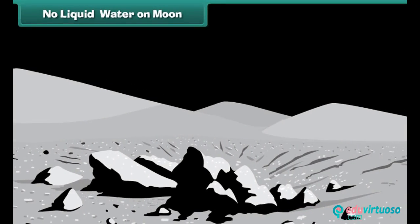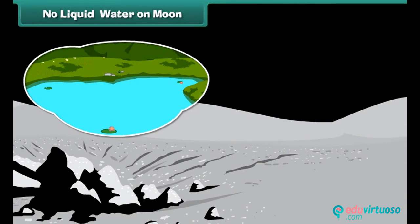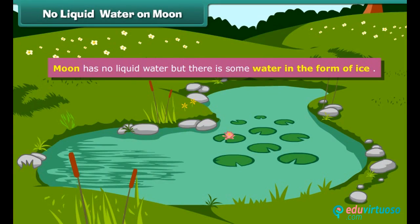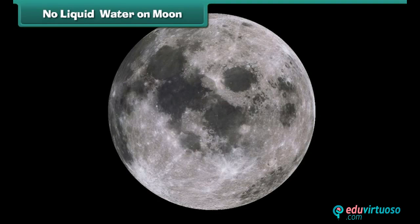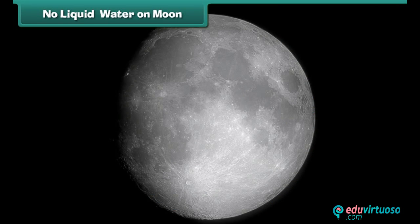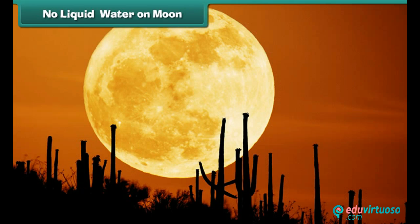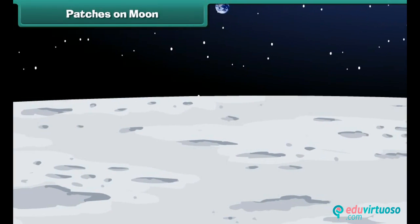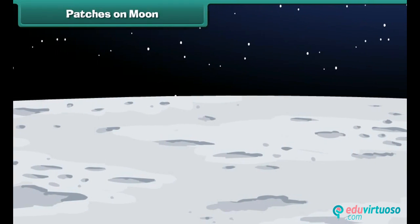Do you think the moon has water like Earth? There is no liquid water on the moon, but there is some water in the form of ice. A NASA spacecraft recently discovered nearly about 100 kilograms of ice and water vapor near the moon's south pole, and it is possible that there is more buried under the surface of the moon.